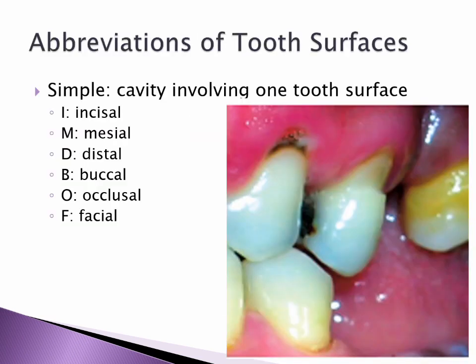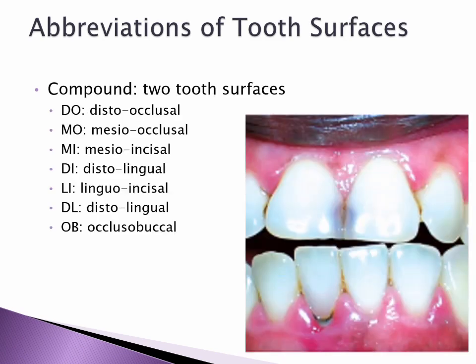Abbreviations of tooth surfaces. Simple cavity involves one tooth surface: I (incisal), M (mesial), D (distal), B (buccal), O (occlusal), F (facial). Compound cavities involve two tooth surfaces: DO (disto-occlusal), MO (mesio-occlusal), MI (mesio-incisal), DI (disto-incisal), LI (linguo-incisal), DL (disto-lingual), OB (occlusobuccal). Structure of carious cavity.